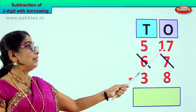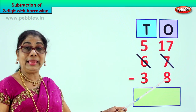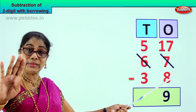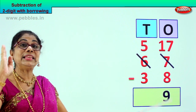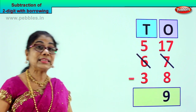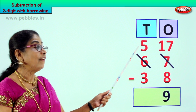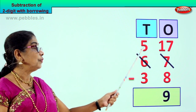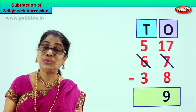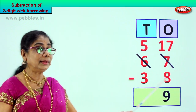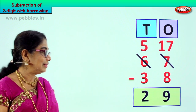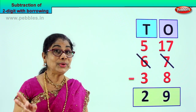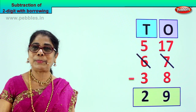Now we minus — 17 minus 8. 17 take away 8: 8, 9, 10, 11, 12, 13, 14, 15, 16, 17 — that is 9. You get 9. 17 minus 8 is 9. And here 5 minus 3: 1, 2, 3 — your answer is 2. 5 take away 3 is 2. So 67 minus 38 is 29. This is the 2 digit borrowing method — subtraction with borrowing.